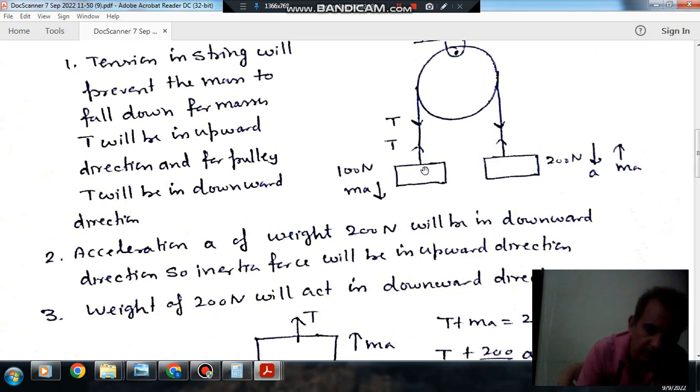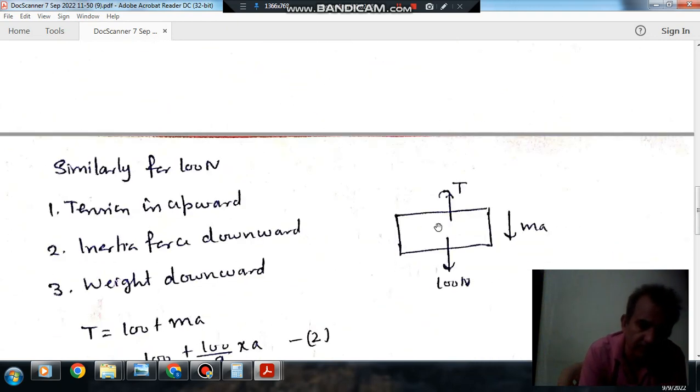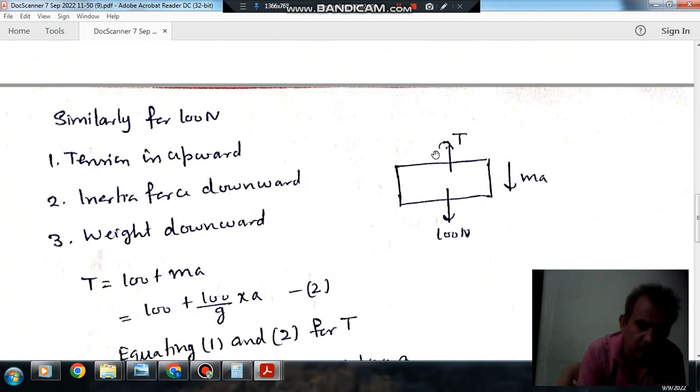Tension in the string will try to pull the block up and pull the pulley down. That is why we are taking tension T in upward direction.